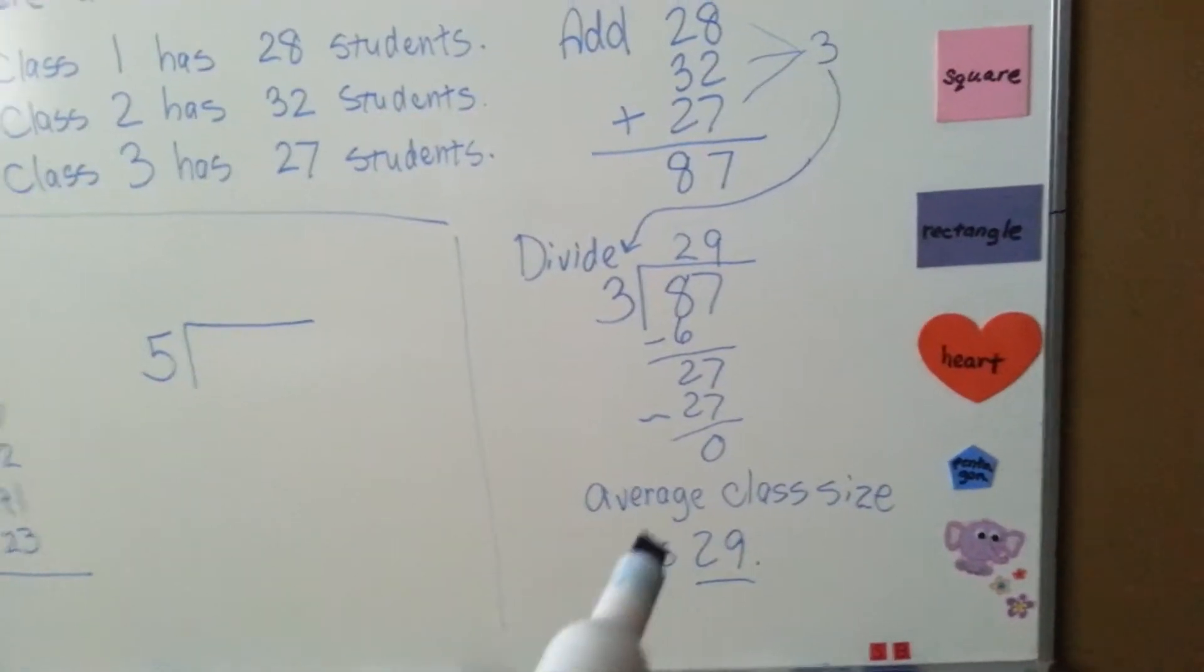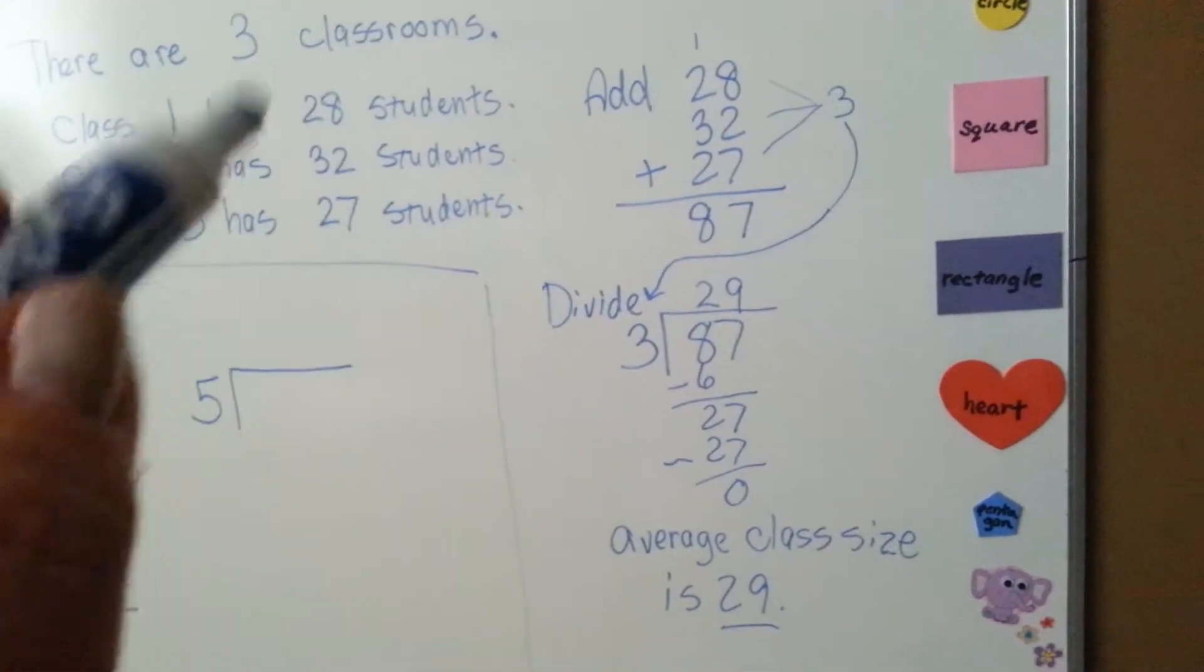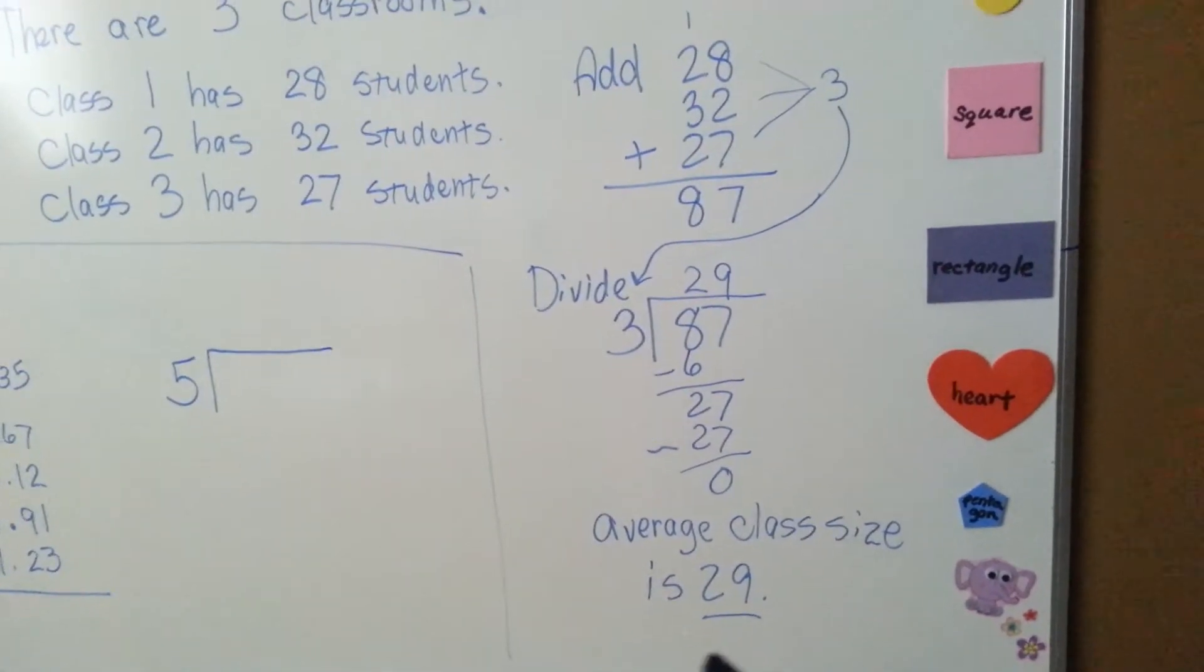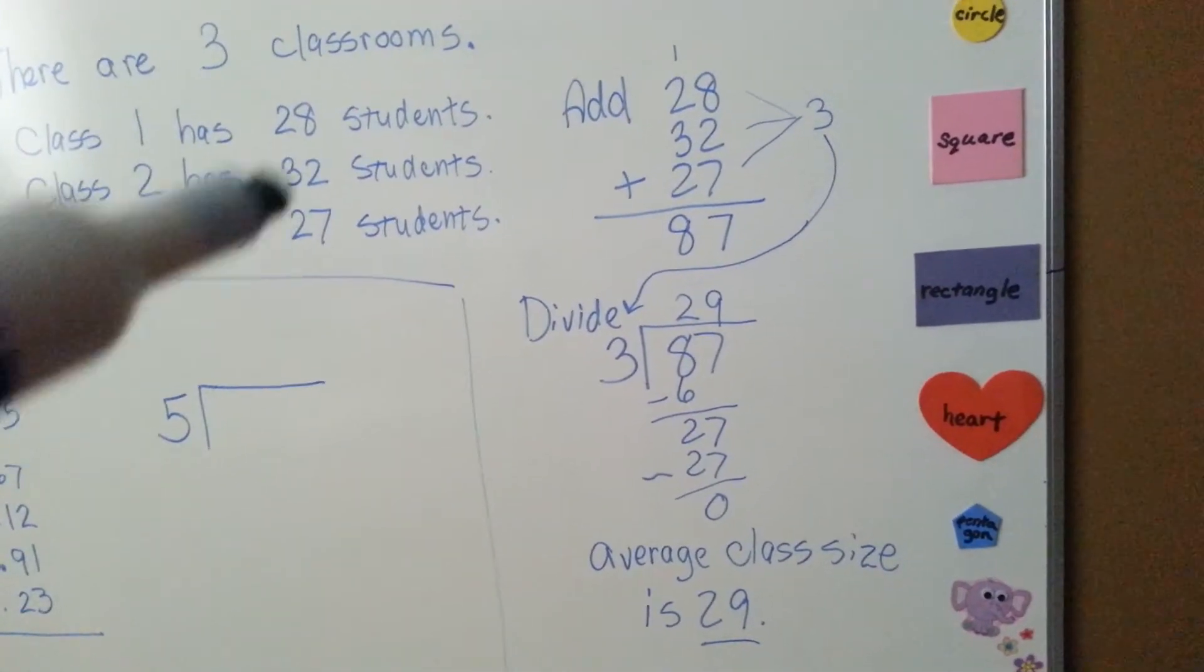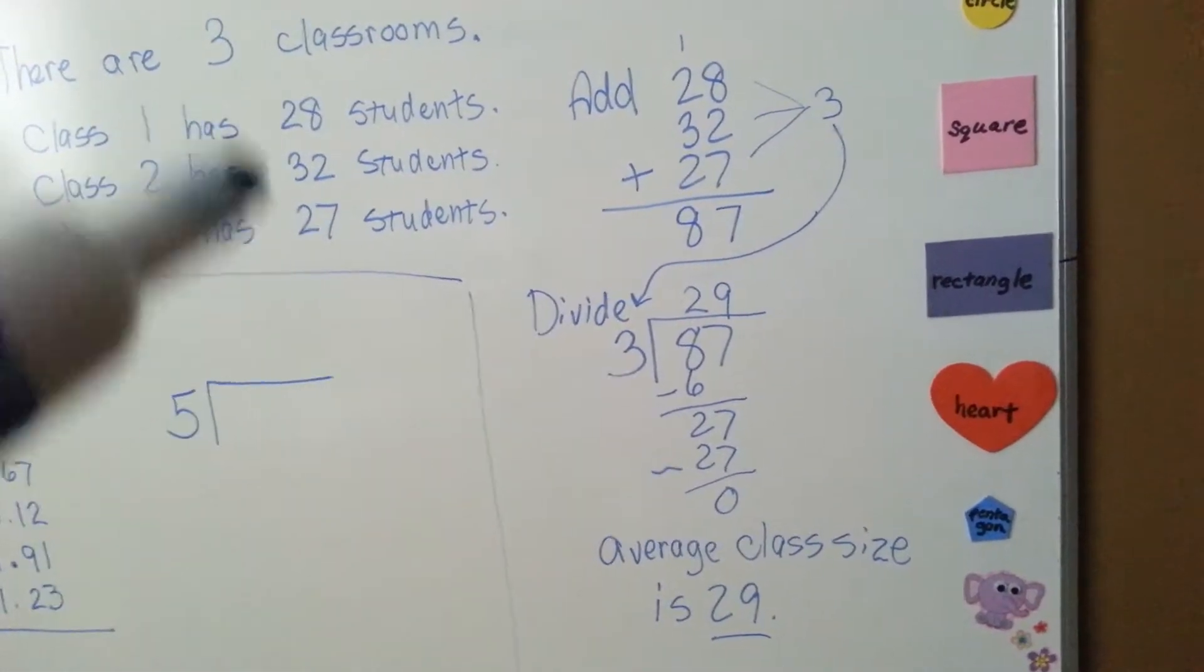So, the average class size of these three classes is 29 students. We added up the three numbers and then divided it by the three. So let's look at this.